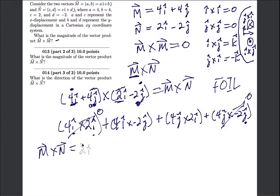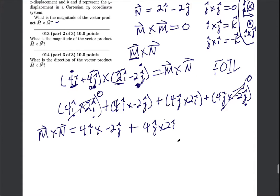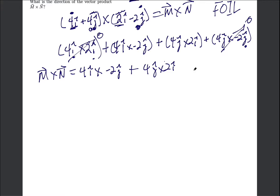M cross N then is equal to this first one, 4i-hat crossed with negative 2j-hat. And then we want to add in the other one, 4j-hat crossed with 2i-hat. And let's use some algebraic friendliness because there's so many things being multiplied here.